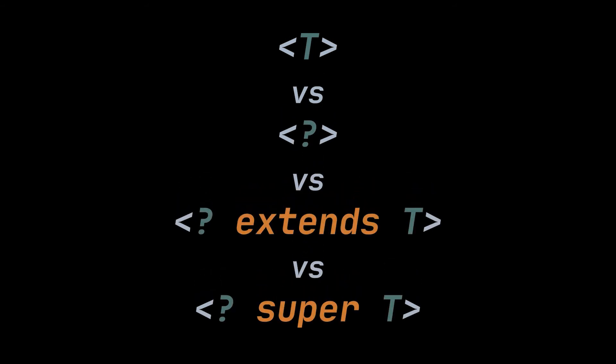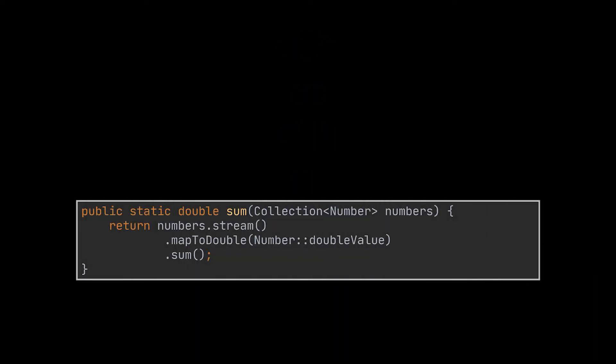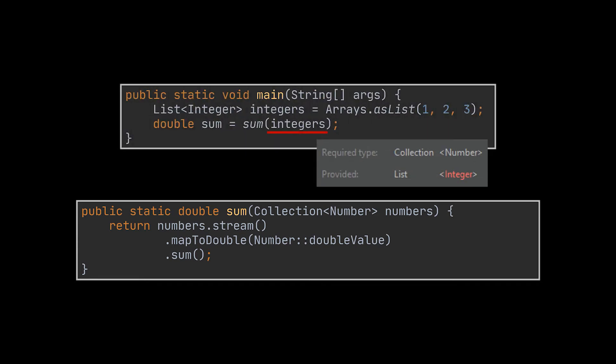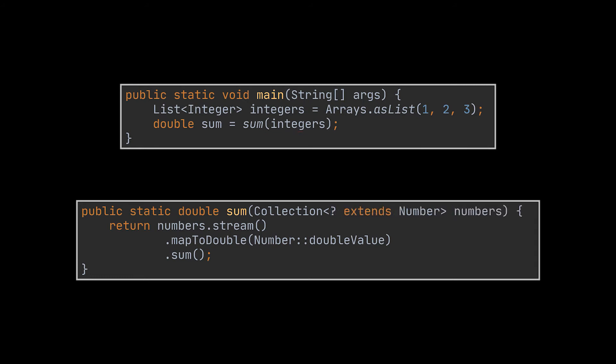Now let's answer when to use each wildcard. Suppose we have a method that calculates the sum of numbers in a collection. Since collections are invariant, passing a List of Integer or List of Double won't compile. The extends wildcard is the answer here — it allows us to pass a collection of any subtype of Number, and the compiler is happy, producing the correct output.